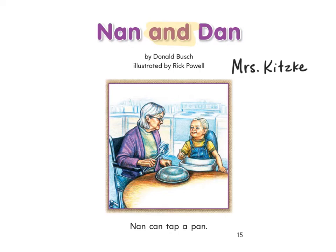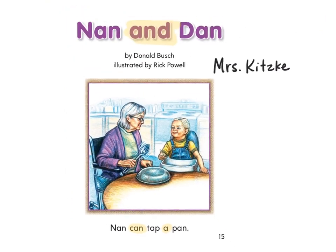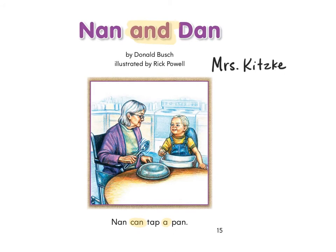I see two sight words. What kind of words are we looking for? Words that have what in them? Short A. You're right. So in the title, I see this word has a short A — 'nan.' The word 'and' has a short A. And 'dan,' 'can.' So the title of this story is Nan and Dan.